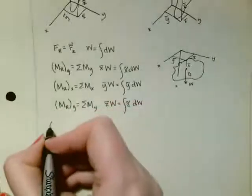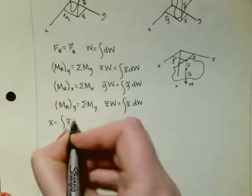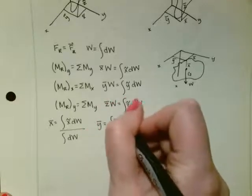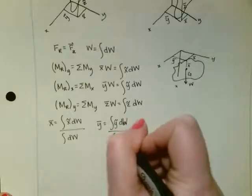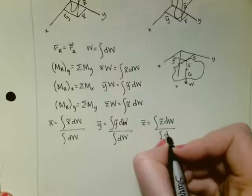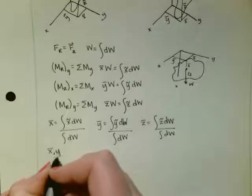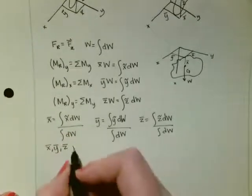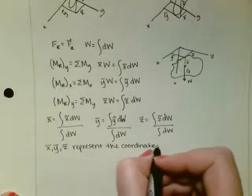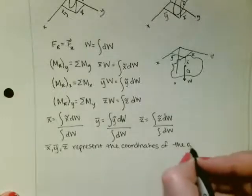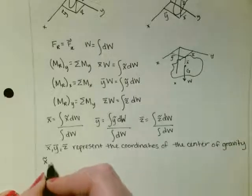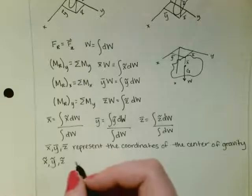And if we rearrange these equations, we get that x̄ is equal to the integral of x̃ dw divided by the integral of dw. ȳ is equal to the integral of ỹ dw divided by the integral of dw. z̄ is equal to the integral of z̃ dw divided by the integral of dw. Where x̄, ȳ, z̄ represent the coordinates of the center of gravity, and x̃, ỹ, and z̃ represent the coordinates of each particle in the body.